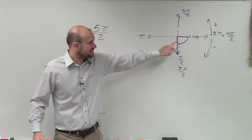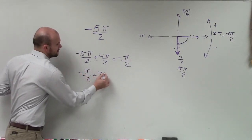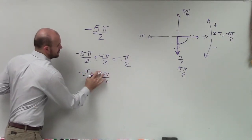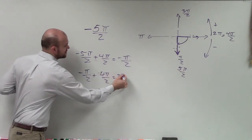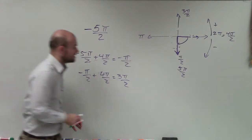Same initial, same terminal. And then, if I add 4π over 2 again, that's just going to give me 3π over 2. And again, 3π over 2 is going to represent this angle.